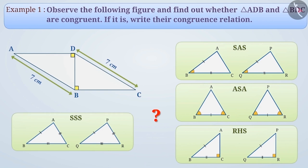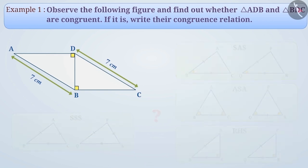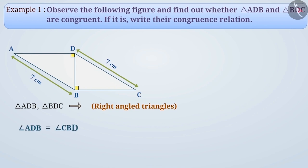For this, we will first understand the given information. In the given figure, both triangle ADB and triangle BDC are right-angled triangles, in which angle ADB equals angle CBD equals 90 degrees. At the same time, we have also been given that hypotenuse AB of triangle ADB and the hypotenuse CD of triangle BDC both measure 7 cm.